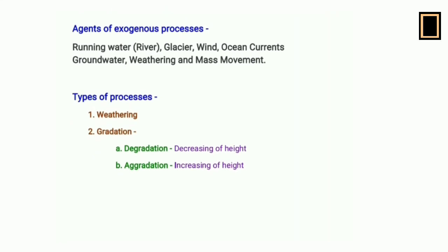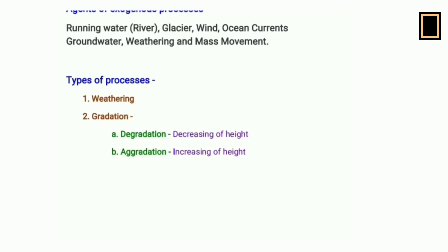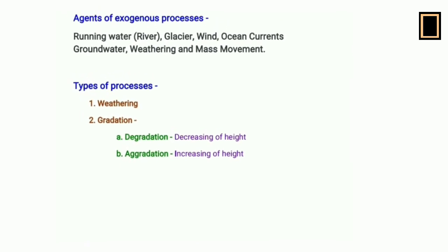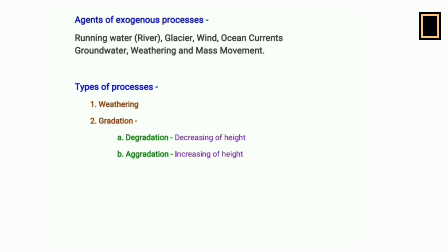There are two types of exogenous processes: weathering and gradational processes. In weathering, the disintegration and decomposition of rock strata is the key process. Disintegration and decomposition occur either physically or chemically — rock strata may be fragmented into pieces or decomposed by chemical reactions. Weathering is basically a static process.